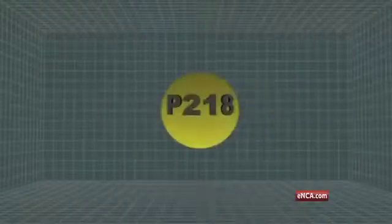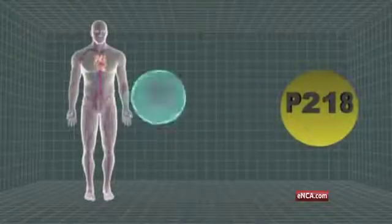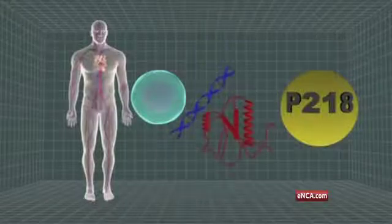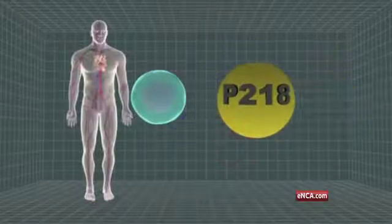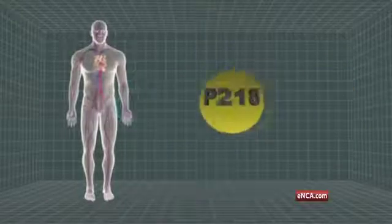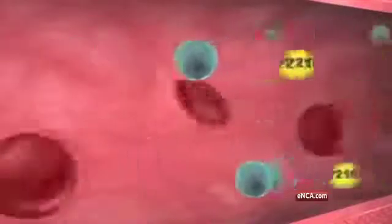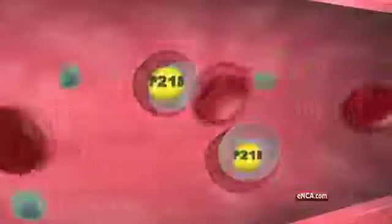Thai researchers discovered the protein target responsible for the growth of the parasite's DNA. By preventing the growth of the protein target, the new anti-malarial P218 chemical aims to stop the DNA of malaria parasites from replicating. The compound can also completely kill malaria parasites.